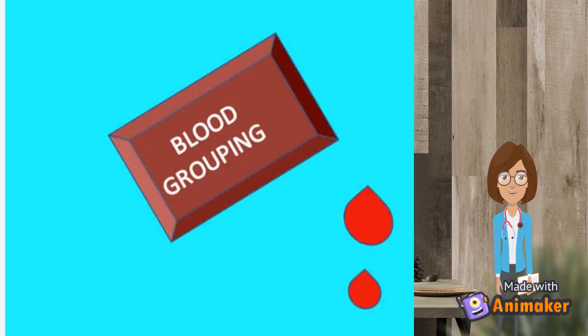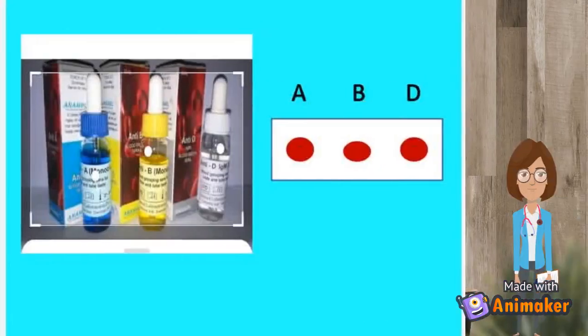Nearly 4 to 6 liters of blood is circulating in our body. Let's have a quick look at the procedure.